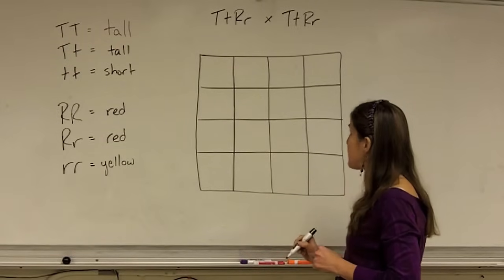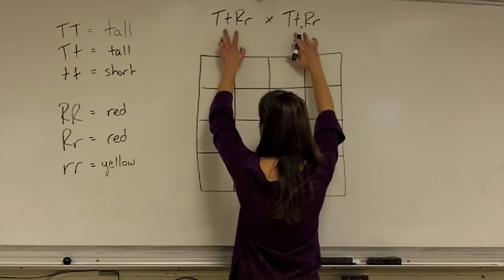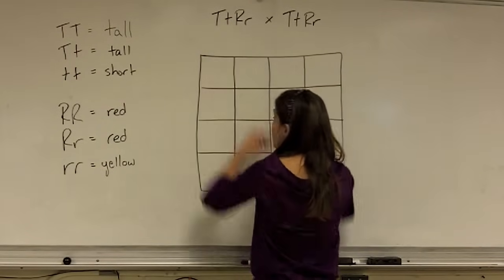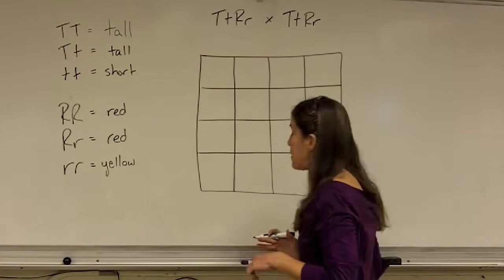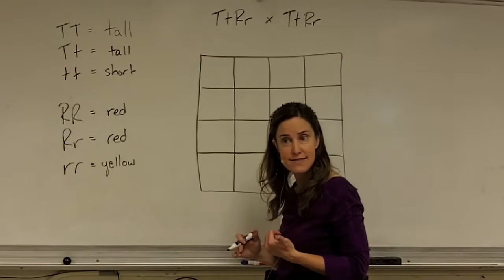The next step is to determine what alleles each of these pairs can put into their gametes. And to do that, the easiest way is to use the FOIL method, as is sometimes used in math. So FOIL stands for first, outside, inside, last.